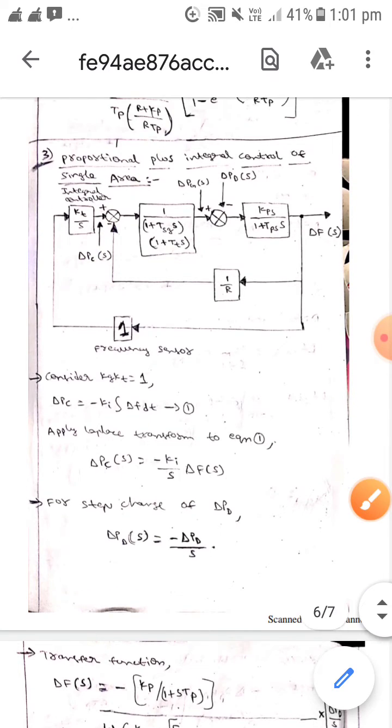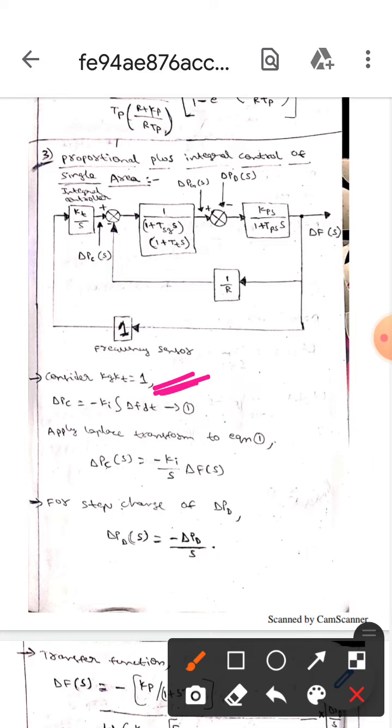Consider kg times kt equals 1, and also delta pc equals minus ki times integral of delta f dt. By applying Laplace transform to equation 1, this equation becomes delta pc of s equals minus ki by s times delta f of s.